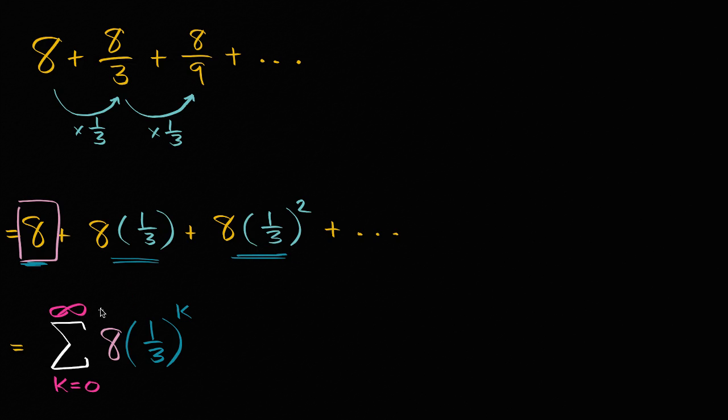So now that we've seen that we can write a geometric series in multiple ways, let's find the sum. Well, we've seen before, and we prove it in other videos, if you have a sum from k equals 0 to infinity, and you have your first term a times r to the k power.